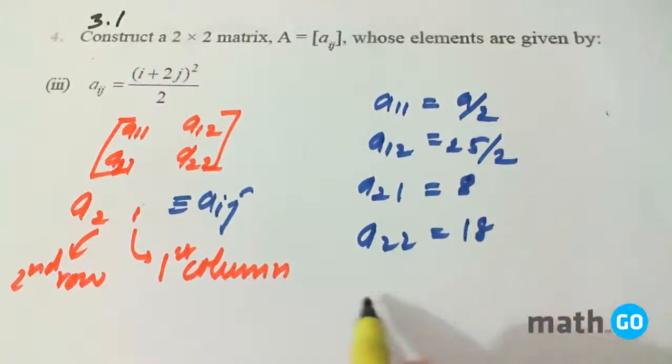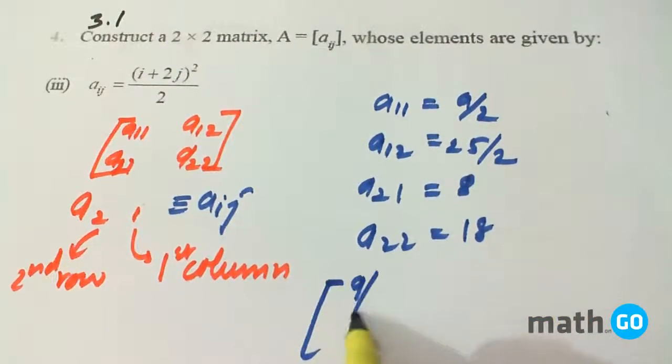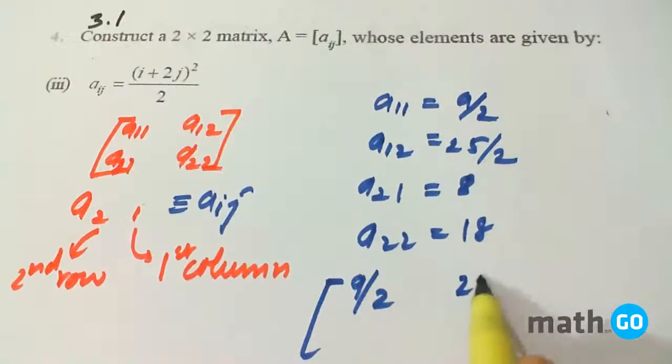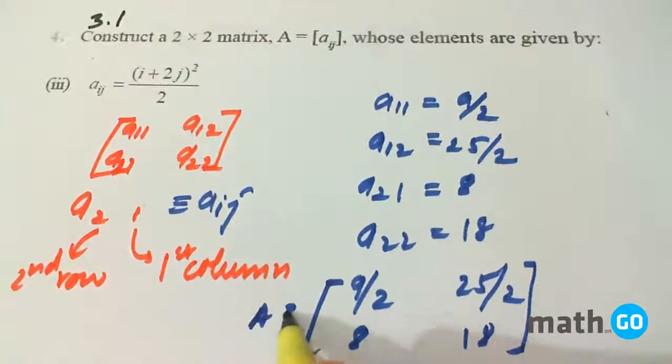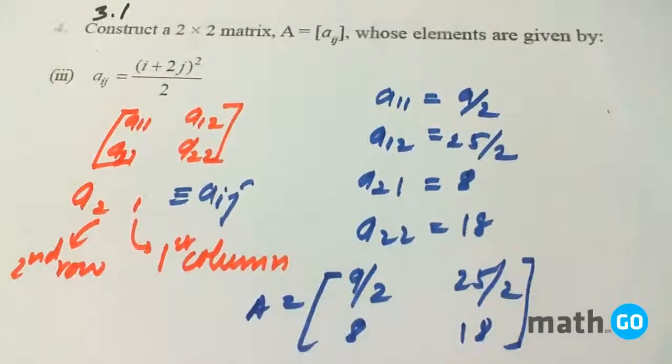So our matrix becomes 9/2, 25/2, 8, and 18, which is the answer.